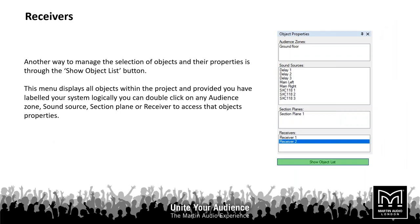Another way to look at your receivers or any individual sources, rather than just clicking on them in your workspace, is to go to the object list. The 'show object list' button appears in the left-hand side window where all your other object properties are. Click on it and it gives you a list of all your devices. As you click on each device in that list it will be highlighted in your main workspace, so you can see which area or loudspeaker you're looking at, and going from object list to object properties will bring up the parameters for that loudspeaker in your sidebar.